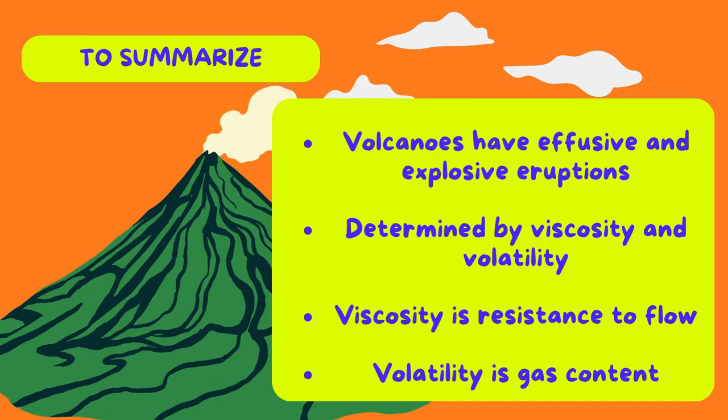To summarize, volcanoes have effusive and explosive eruptions, and which one a volcano will have is determined by viscosity and volatility. Viscosity is the resistance to flow that a liquid, or in this case magma, has, and volatility is the gas content inside of a volcano.